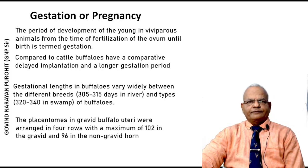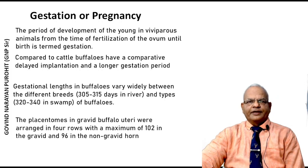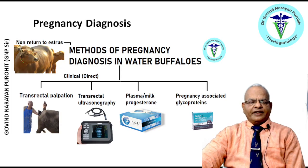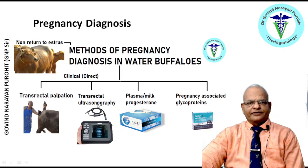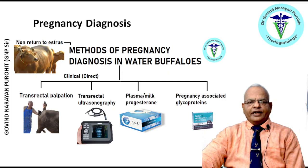Farmers are most interested in pregnancy diagnosis once they have had their buffalo inseminated — they want to know whether the buffalo has become pregnant or not. There are a large number of pregnancy diagnosis methods, but the most commonly used are clinical methods — transrectal palpation and transrectal ultrasonography — and laboratory methods, which include plasma or milk progesterone assay and the assay of pregnancy-associated glycoproteins.